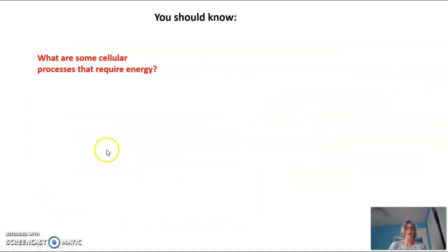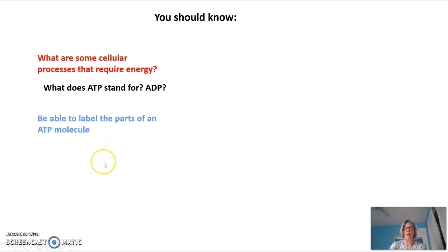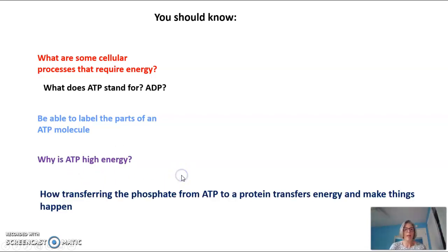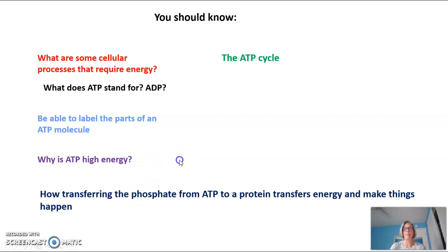So what you should know: what are some processes that require energy in the cell; what ATP and ADP stand for; how to label the parts of an ATP molecule; why ATP is a high-energy molecule; how transferring a phosphate from ATP to a protein transfers energy and makes things happen; and how to diagram the ATP cycle, where ATP goes to ADP and back to ATP again.